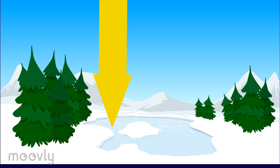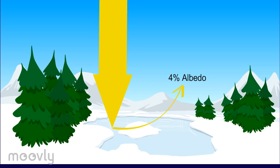Around 50% of the original short-wave radiation reaches the Earth's surface. Once it arrives, a small percentage is reflected by the surface back into the atmosphere. This is called albedo. The albedo varies depending on the surface the radiation lands on. For example, a frozen pond covered in snow would reflect much more radiation than a forest or an ocean. What isn't reflected is absorbed by the Earth's surface.